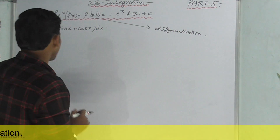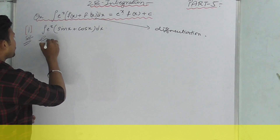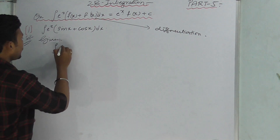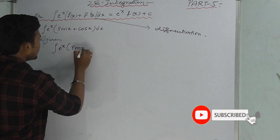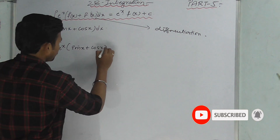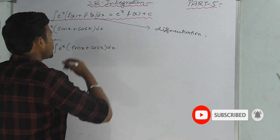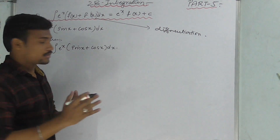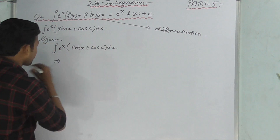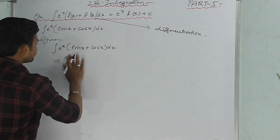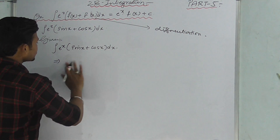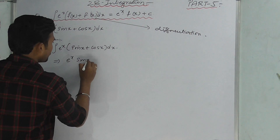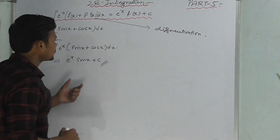So that example is here. Given — this is a problem: Integral e^x (sin x + cos x) dx. If you choose the right function, you can observe and solve it. The answer is e^x · sin x + C.